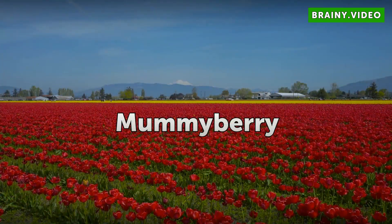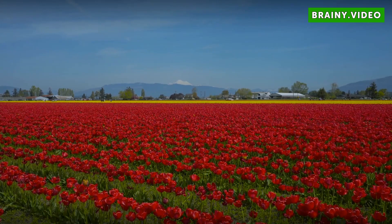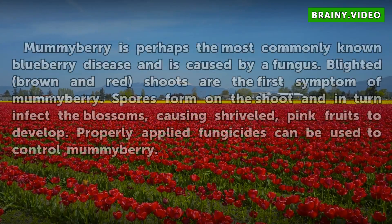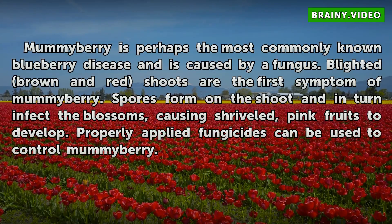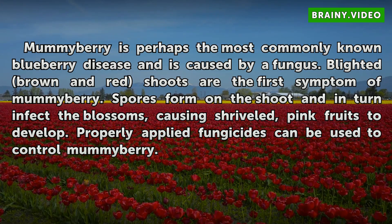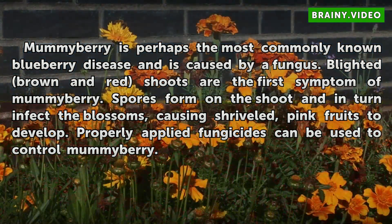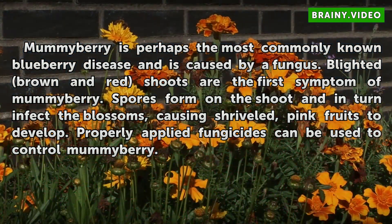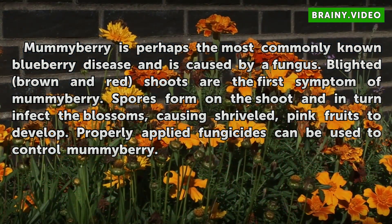Mummyberry. Mummyberry is perhaps the most commonly known blueberry disease and is caused by a fungus. Blighted brown and red shoots are the first symptom of mummyberry. Spores form on the shoot and in turn infect the blossoms, causing shriveled, pink fruits to develop. Properly applied fungicides can be used to control mummyberry.